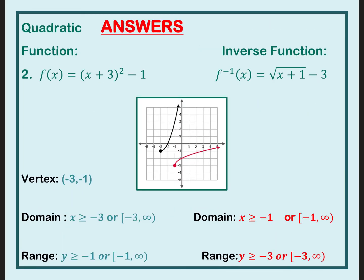Let's look at those graphs. You can write the answers in inequality form or interval notation. When I restricted my domain, it was this right half of the quadratic, and now this is a mirror image over y equals x. Make sure you write this down: you're going to restrict the domain by restricting it to the x-coordinate of your vertex. So I'm only doing the half of my quadratic that starts at or after x equals negative 3.